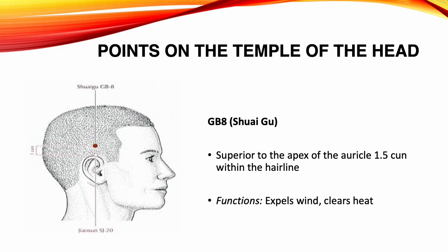Gallbladder 8, Shui Ku. Location: superior to the apex of the auricle, 1.5 zun within the hairline. Functions: expels wind, clears heat. Indications: migraine, vertigo, tinnitus, deafness, blurred vision.